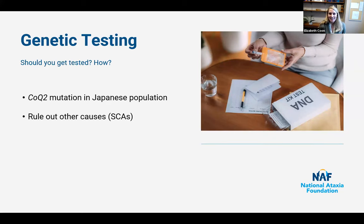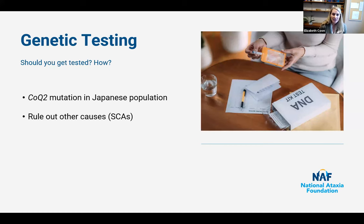Regarding genetic testing — who should get tested and how: Professor Shoji will be able to talk about the CoQ2 mutation found in the Japanese population, which was not seen in the North American or European population. If there is any suspicion that this could be a spinal cerebellar ataxia, ruling out those other causes is very important — especially for someone who has a family history, is presenting at an early age, or has a slower course and not as severe autonomic failure as we see in MSA.